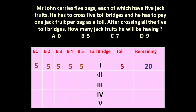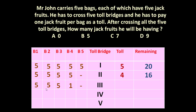Before crossing the 2nd toll bridge, he will distribute these 20 jackfruits into 4 bags and 1 bag will be empty. So now he has only 4 bags with jackfruits, and he has to pay only 4 jackfruits as toll tax. So remaining jackfruits with him will be 16.